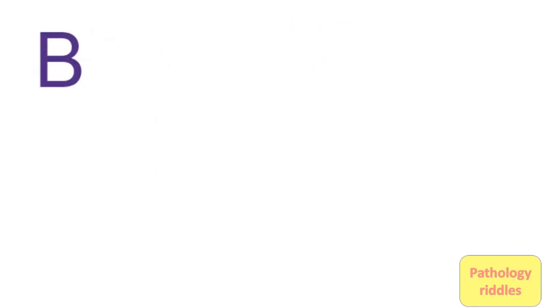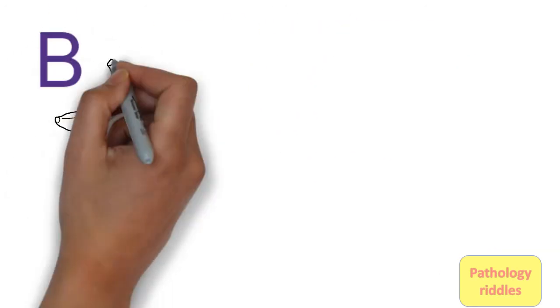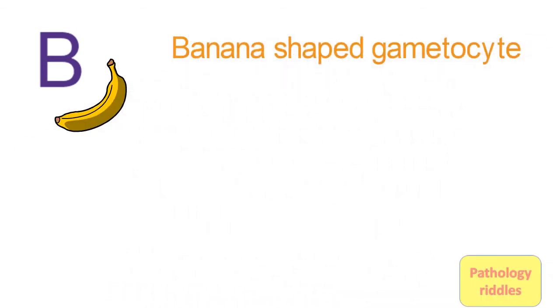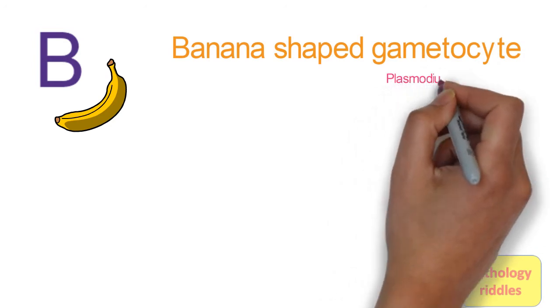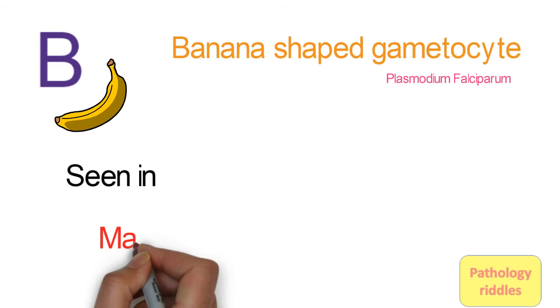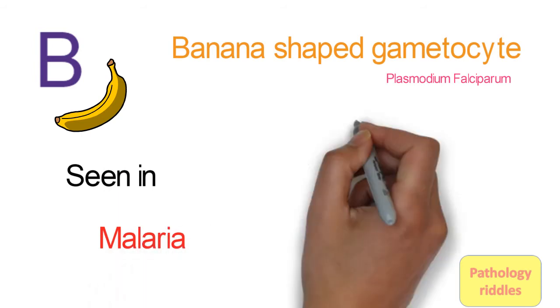Next we go to B. B is for banana. What is banana-shaped in pathology? These are the gametocytes of Plasmodium falciparum, the species that causes malaria with complications.